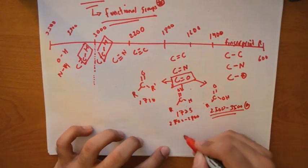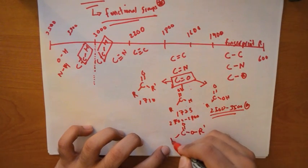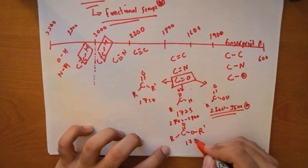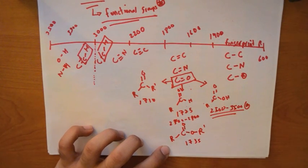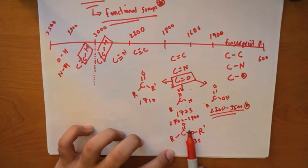Another one is an ester. Esters are a little bit higher than aldehyde, which is 1735. Usually this is something that comes on a test more often because professors like to throw it out there and they want to know your knowledge.